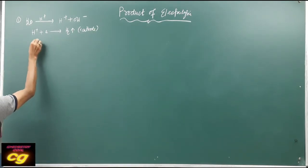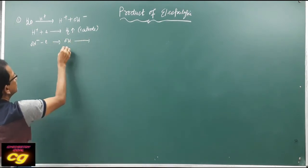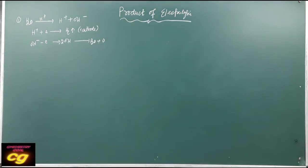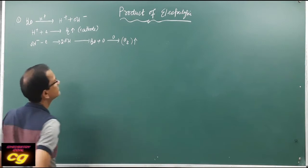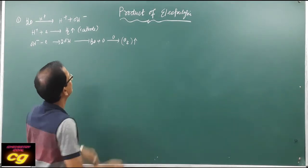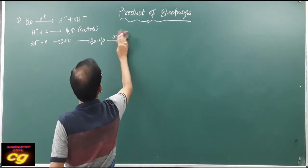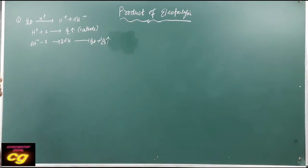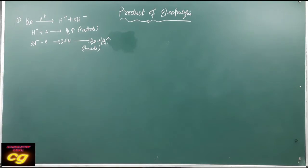At the anode, OH− loses an electron to produce OH, which is unstable and dissociates to produce water and oxygen. The oxygen atoms combine to form O2 gas — oxygen cannot remain in atomic form, it is always produced as O2, or you can write it as ½O2. This reaction occurs at the anode. So the product of electrolysis of water is hydrogen gas at the cathode and oxygen gas at the anode.